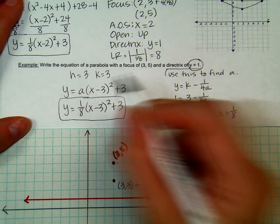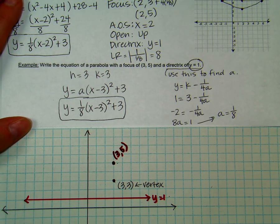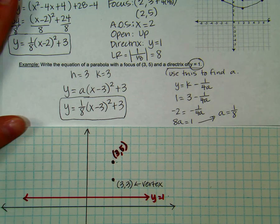Now we simply plug that back into our equation: y equals one-eighth times x minus 3 squared plus 3. This is our equation in standard form.